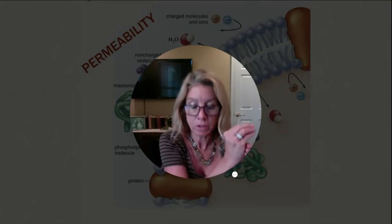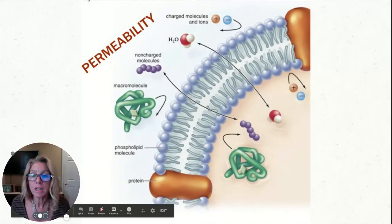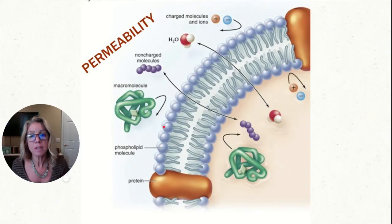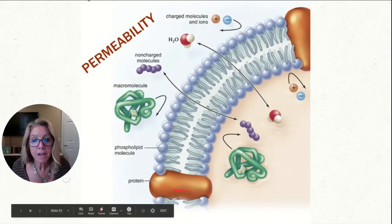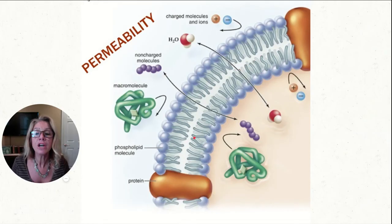So we have the big picture in place. The first thing we talked about in this video was the structure of a cell membrane — the components — and how that relates to their function. Now the next part I want to talk about is how everything goes in and out of a cell through the cell membrane. We're going to talk about the permeability of a cell membrane.